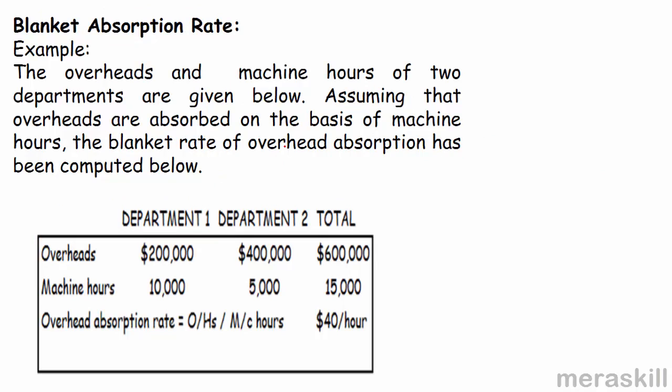Look at this example. Overheads and machine hours of two departments are given below. Assuming overheads are absorbed on the basis of machine hours, the blanket rate of overhead absorption is computed as follows. Department 1 has overheads of 200,000 and department 2 has 400,000, giving a total of 600,000. Machine hours were 10,000 and 5,000, totaling 15,000. Therefore, the blanket rate is $40 per hour.